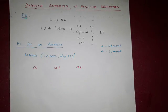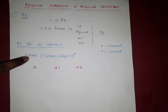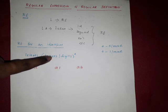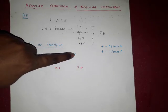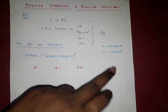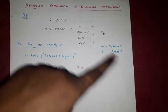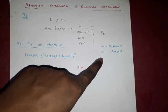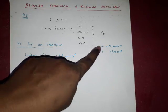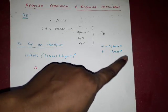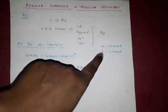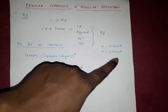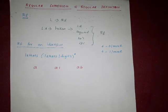So what is the regular expression for an identifier? This is the regular expression: a letter followed by letters or digits with 0 or more times. In regular expressions, there are two notations: one is star and the second one is plus. Star represents 0 or more occurrences, and plus represents 1 or more occurrences.